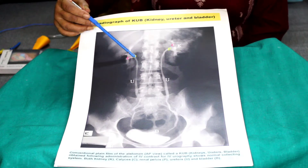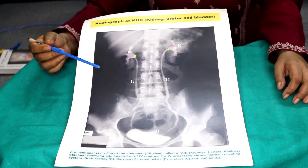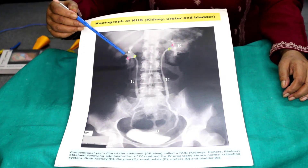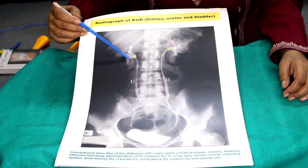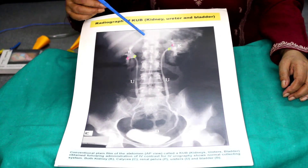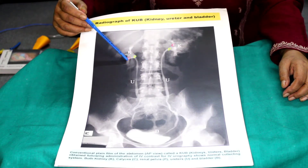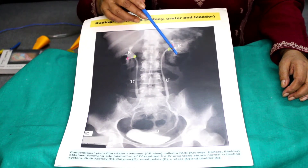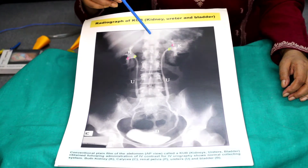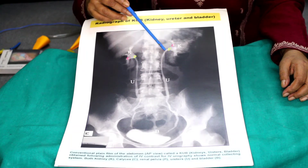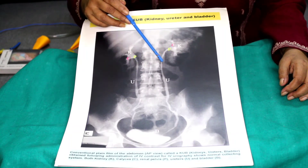This is a very nice descending pyelogram, or intravenous pyelogram. Here you will see these are the major calyces. There are cup-shaped small minor calyces, and this is the end-on view of the calyx. Then you will see the pelvis of the ureter, and then the ureter descends downwards.